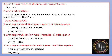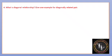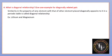What is diagonal relationship? Similarity in the property of one element with that of another element placed diagonally opposite to it in the periodic table is called a diagonal relationship. Both elements will have similar physical and chemical properties despite being placed diagonally in the periodic table. Lithium and magnesium are a prime example of a diagonal relationship pair.